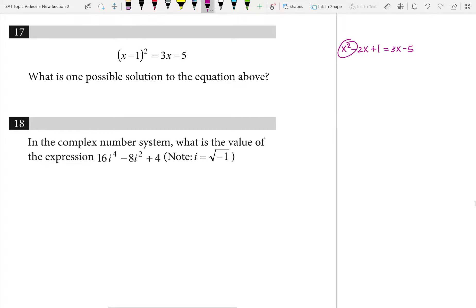And because I see the x squared, I know we have to factor. I know we have to set this equal to 0. So in doing that, I'm going to get x squared minus 5x plus 6. That's from me subtracting that and adding that to both sides.